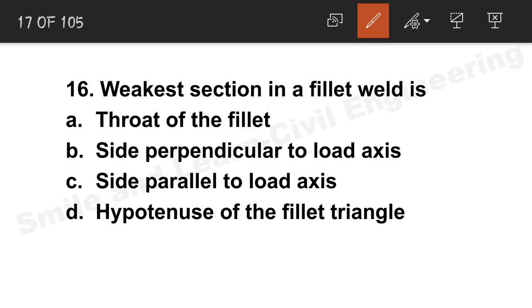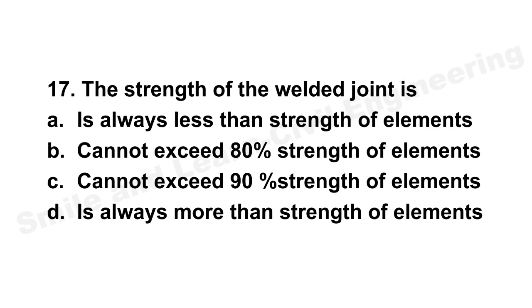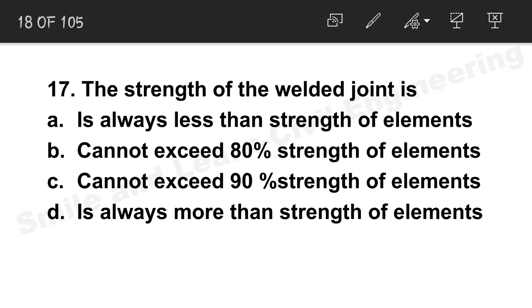Question 16: The weakest section in a fillet weld is the throat of the fillet. Option A is the correct answer. Question 17: The strength of a welded joint is always less than the strength of the elements. Option A is correct, though in rare cases it may exceed.